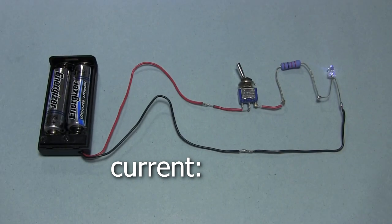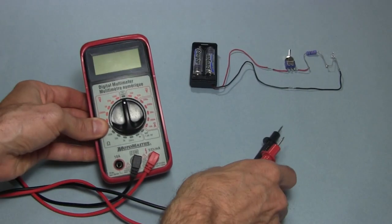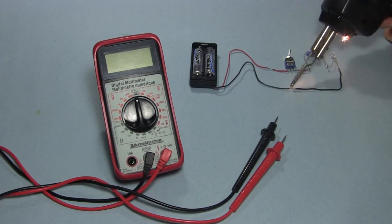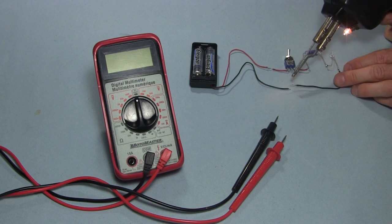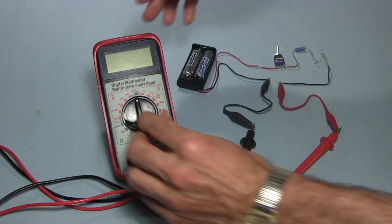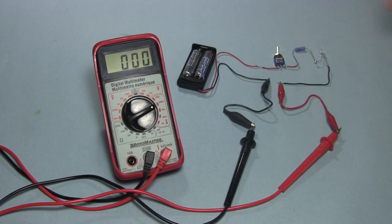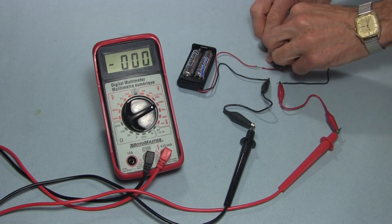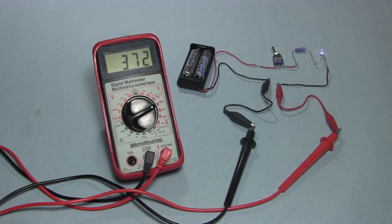For example, we could say that there are 5 amps running through this wire, or maybe 50 milliamps. We can measure just what the current is using this multimeter. To do that, we have to break the circuit and insert the meter. We set the meter to an appropriate scale and see that the current is around 370 microamps.